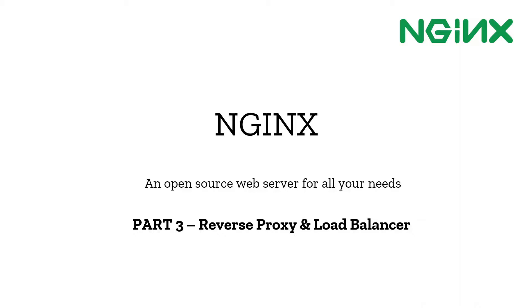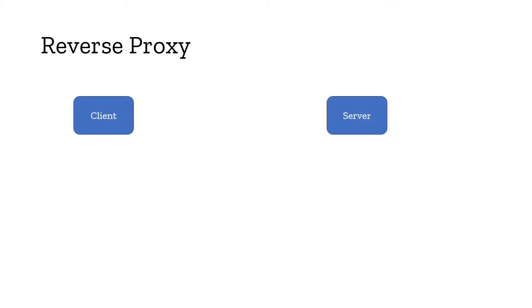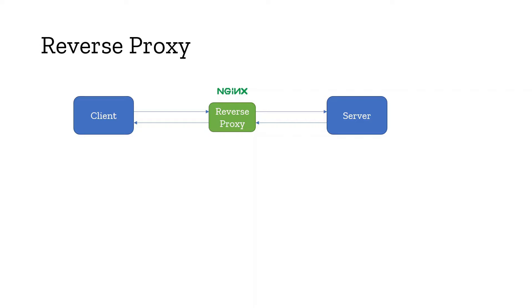So what is a reverse proxy and load balancer, and how can we use nginx for this purpose? A reverse proxy is something which sits in between a client and a server. It normally sits in front of the server and intercepts all incoming requests from the client. When a client requests information, it goes via the reverse proxy, which forwards the request to the origin server. The server responds back to the nginx reverse proxy, which then sends the response to the client.